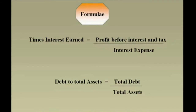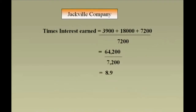For times interest earned ratio: net income is $39,000, but that's after deducting tax of $18,000 and interest expense of $7,200, so you have to add those back to get profit before interest and tax, then divide by the interest expense of $7,200. For Jackville Company, the times interest earned comes to around 8.9. The higher the better — this is just above the cutoff point of 5, so we can conclude the company has the ability to pay off its debts, but only just.